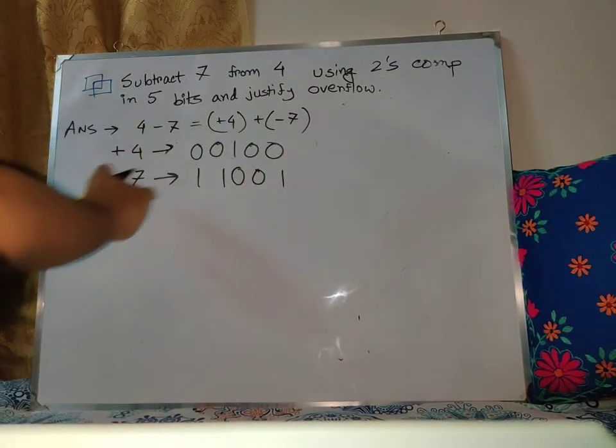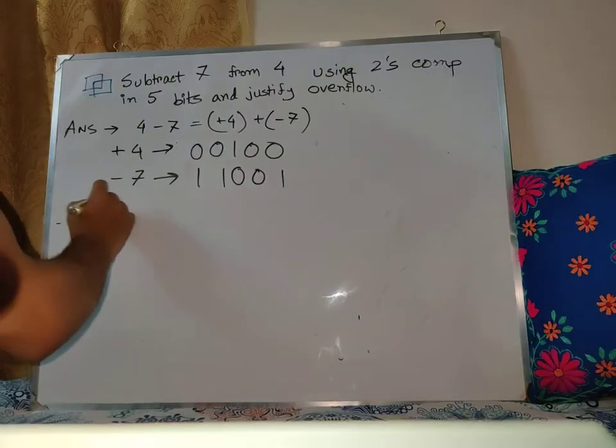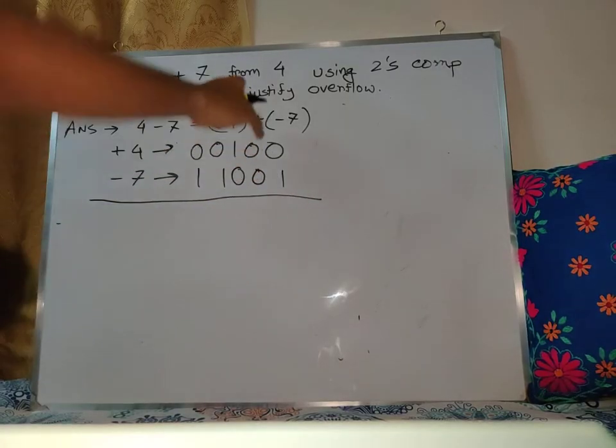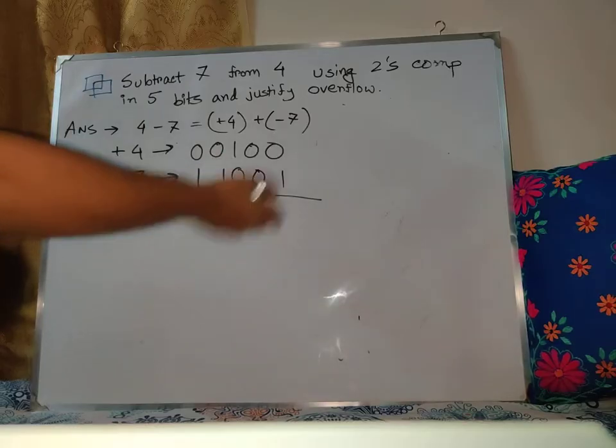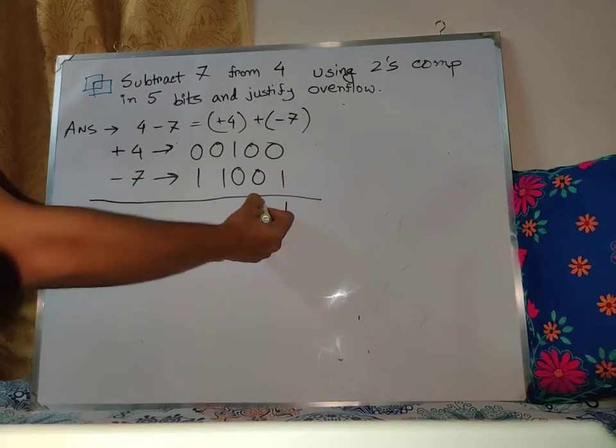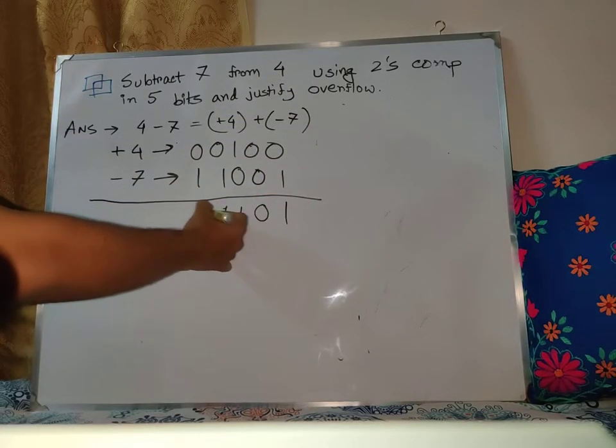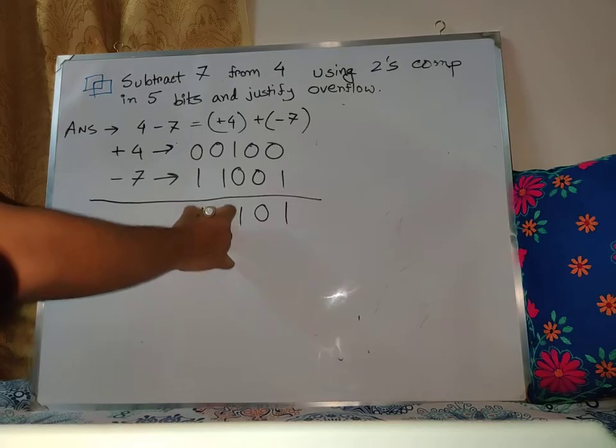Alright, so plus 4's binary in 5 bits and minus 7's binary in 5 bits. Now we just need to add these two together. So let me add them. After adding, the result is...